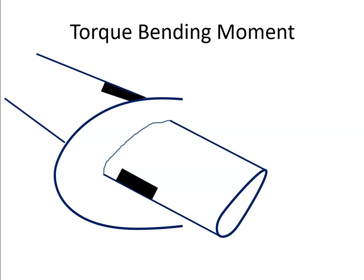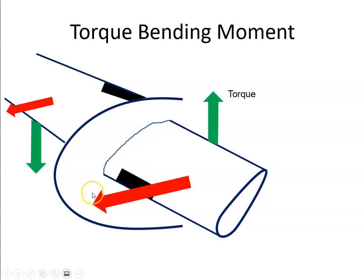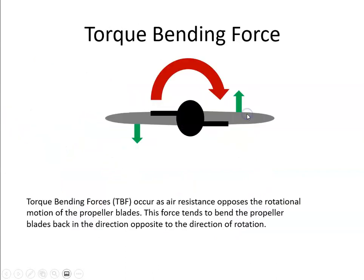Another force that the propeller experiences is the torque bending moment. A propeller will be producing some thrust, and along with the thrust, we get some torque — consider this in terms of lift and drag. The torque is acting at the trailing edge of the propeller blade. Looking straight on, we have a propeller rotating in one direction with thrust coming out towards us, and this is our torque vector, occurring at a distance from the centerline.